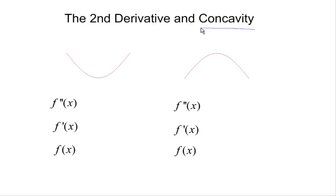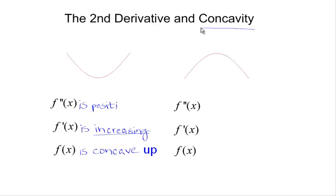If f(x) is concave up, then we know that the first derivative is increasing. We learned from monotonicity that where a function is increasing, that function's derivative is positive. Since the second derivative is the first derivative of the first derivative, everything that f prime tells us about f, f double prime tells us about f prime. That is the relationship. Since f double prime is positive and f prime is increasing, this tells us f is concave up.